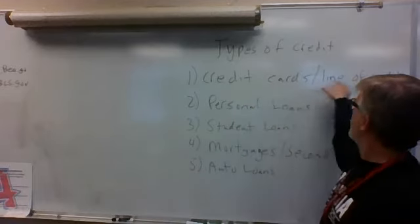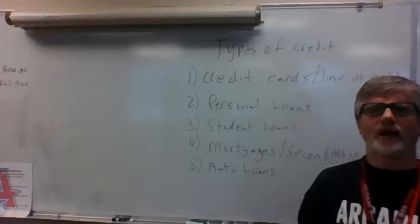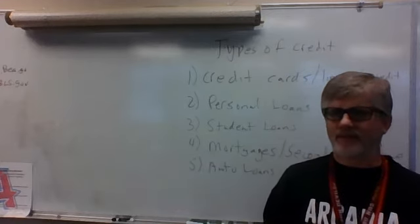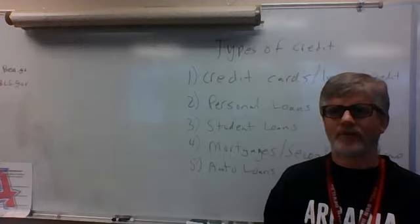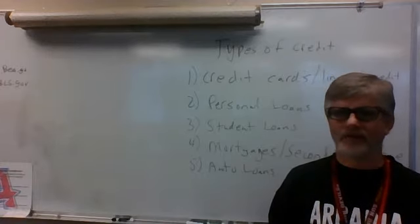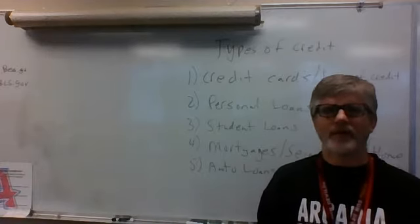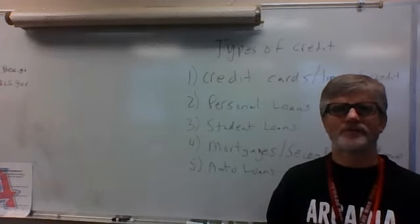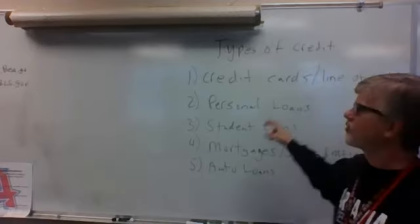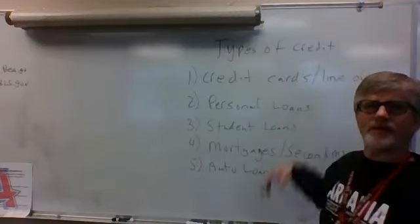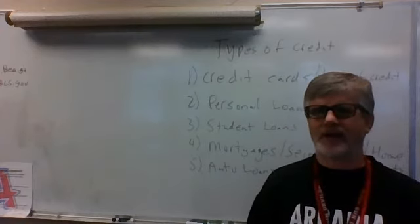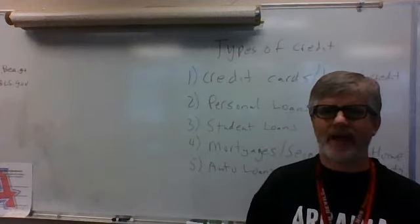The first type is credit cards and lines of credit. A credit card — basically a Visa or MasterCard — you apply from a bank like Wells Fargo, Bank of America, or Discover, and it normally has a set limit. The limit could be $500, $1,000, $2,500, $5,000, $10,000, and so on. A line of credit could be the same thing — you might have overdraft checking or $500 tied to your checking account which you pay back.